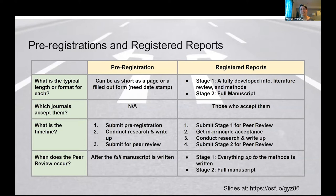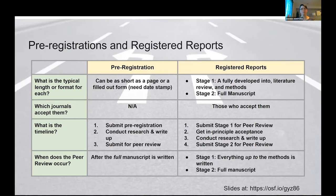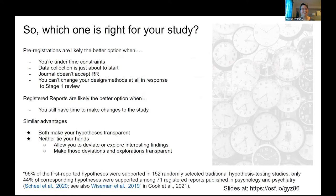Think of it as: 20% of the effort can do 80% of the work. If you're in a situation where you can't do a registered report, pre-register instead. The key difference is that peer review occurs twice for registered reports — before and after data collection — whereas for pre-registrations, peer review occurs only once, after the full manuscript is submitted to the journal.